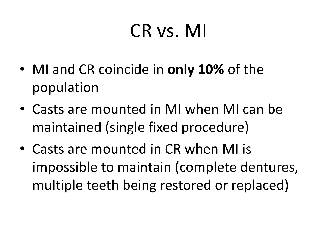Casts of the teeth can be mounted on an articulator in either CR or MI. We use MI particularly when a single crown or bridge is done and the interlocking of teeth can be maintained before and after the procedure. If the patient's teeth lock together well and you can reliably do hand articulation — putting the two casts together by hand and feeling the teeth lock in a stable position — then MI is a good way to mount the casts.